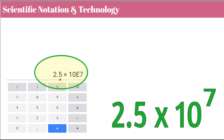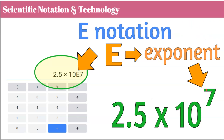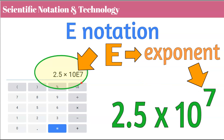Let's talk about scientific notation and technology. When we see a scientific notation value on technology, it's going to look a little different on some calculators or devices. Here, pulled up from an internet calculator, it gave me 2.5 times 10 to the seventh and wrote it as 2.5E7. This E refers to E for exponent, telling us it's 2.5 multiplied by 10 with an exponent of 7. That's called E notation — exponent notation on a calculator.